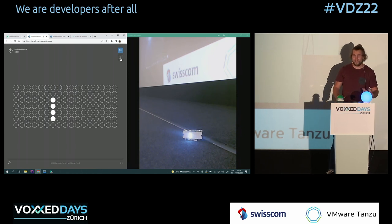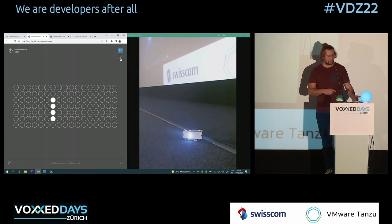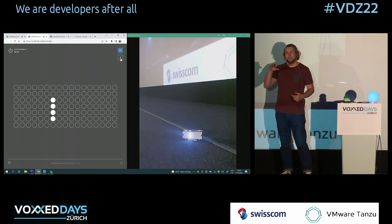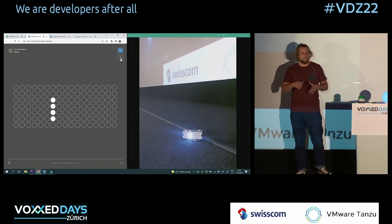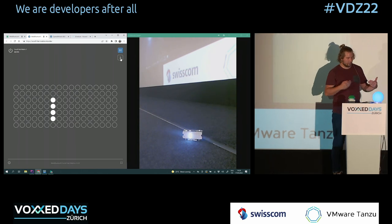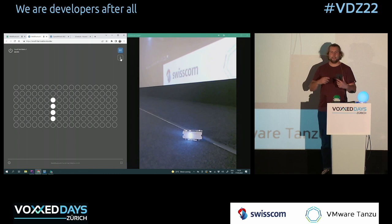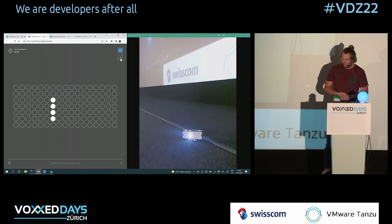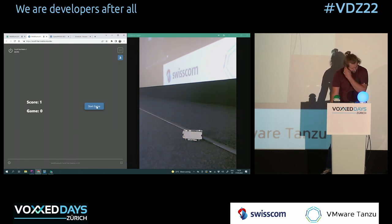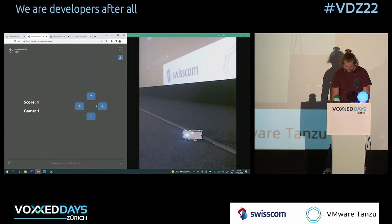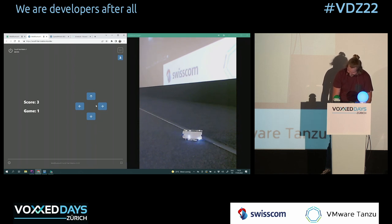My first smartphone was a Nokia 3310 with more pixels, but I could play Snake on it for hours. So I created Snake in the browser as a JavaScript application, using the LED matrix as the play field. Whenever the game state updates, I write a new characteristic to the matrix — and you can play Snake on it.